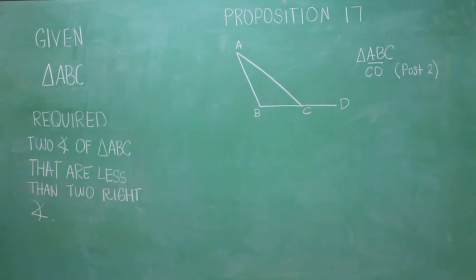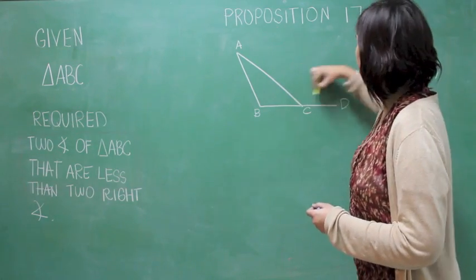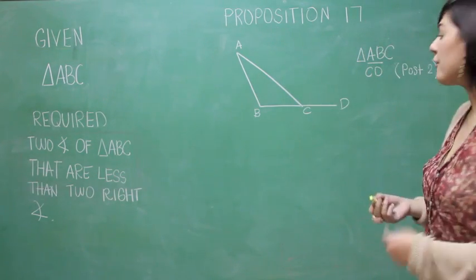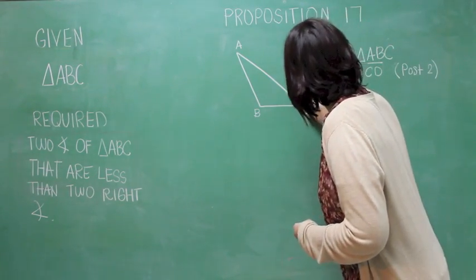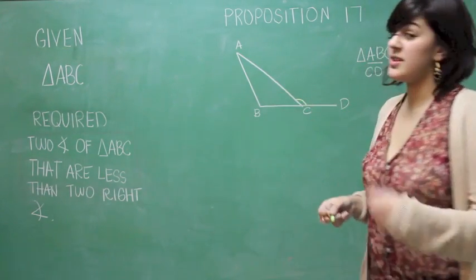Now, we know because of Proposition 16 that the angle ACD, which is in the exterior of our figure, is greater than the angle ABC, which is in the interior.